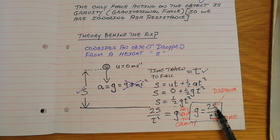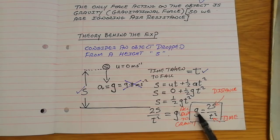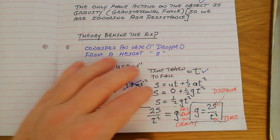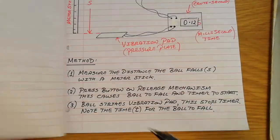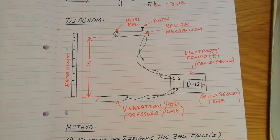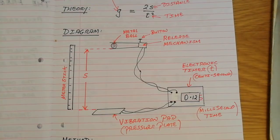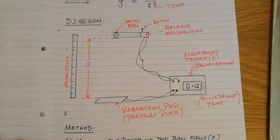So by measuring the distance something falls and the time it takes to fall that distance, we can actually calculate the acceleration due to gravity very easily. Now, looking at a way to actually implement this formula or use this formula, well, this is the traditional setup.